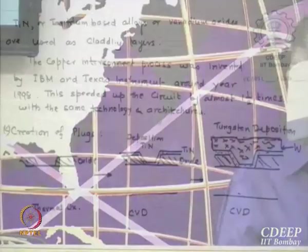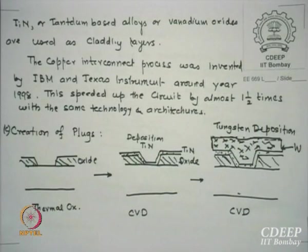Just to give history: copper interconnect process was claimed — I do not know if they invented it — both by IBM and Texas Instruments around 1998. The interesting part was that by just replacing aluminium with copper in at least the top 3 upper layer interconnects, they found their circuit started speeding up by 1.5 times without any architectural change, no dimensional changes — just putting copper layers. They figured out the speed improvement to 1.5 times. So what was a 2.1 gigahertz processor suddenly became a 3 gigahertz processor just by this new process. That is why copper has replaced aluminium at least for top interconnects.